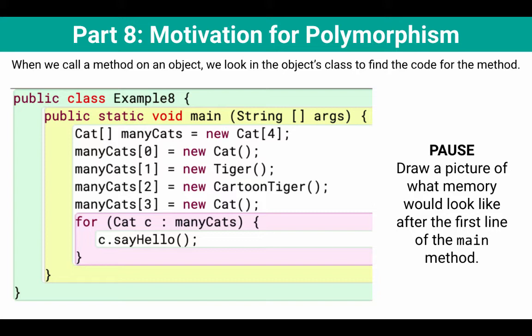Cat array, many cats, gets a new cat array of length four, and I want you to draw a picture of what memory would look like after the first line of the main method. So you should pause here and I'll keep going.